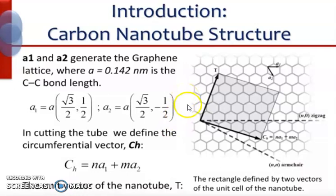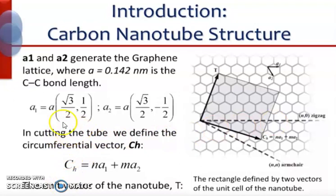Let's now see how carbon nanotubes can be described in relation to their constituent graphene sheets. A graphene sheet can be rolled up at a few angles with respect to the graphene lattice. Different rolls result in different atomic orientations of the atoms on the surface of the carbon nanotube, and each orientation has unique electrical, optical, and chemical properties.